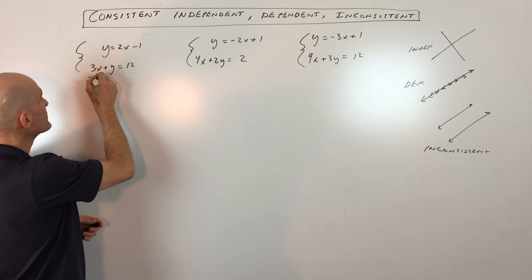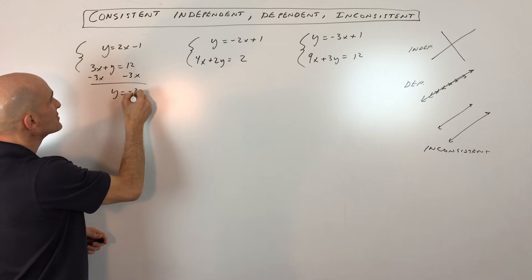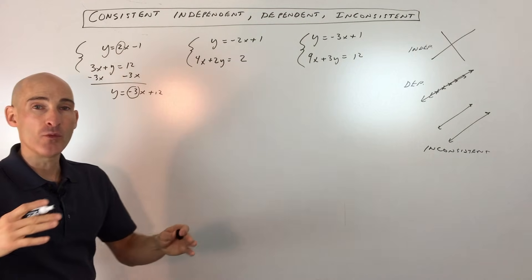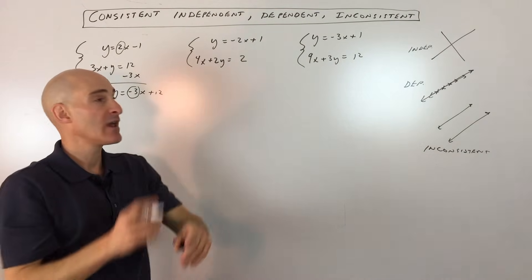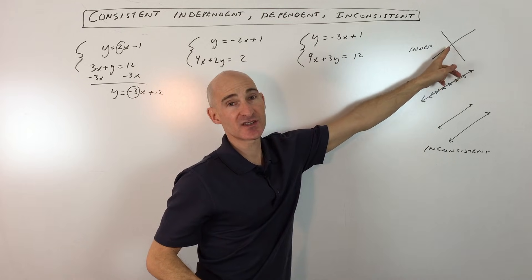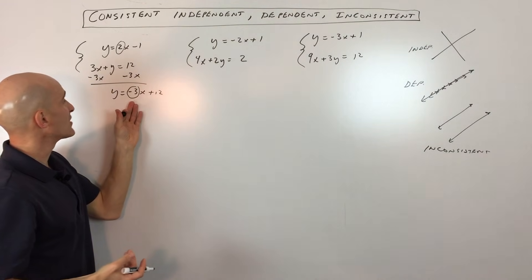So the first thing I'm going to do here is I'm going to subtract 3x from both sides. If I do that, I get y equals negative 3x plus 12. Now you remember, the number in front of the x here, that's the slope. If they have a different slope, they're going to be going up at a different rate, and what that means is they're just going to cross at one point. So we know there's just going to be one solution to this system, and that's exactly what's going to happen here.